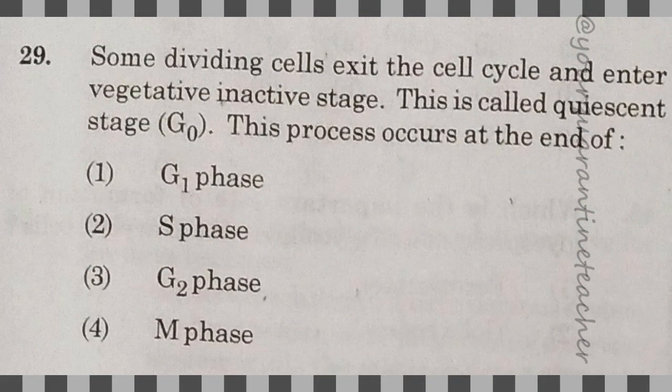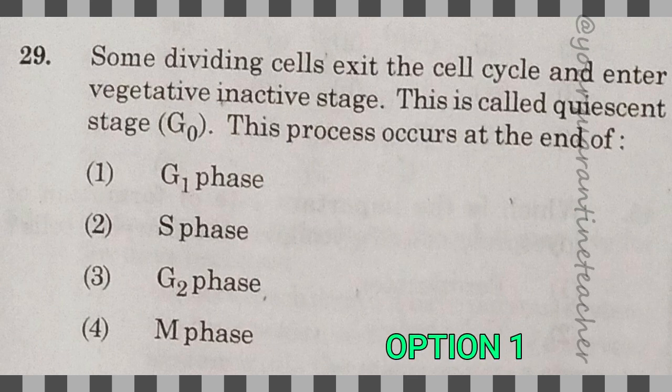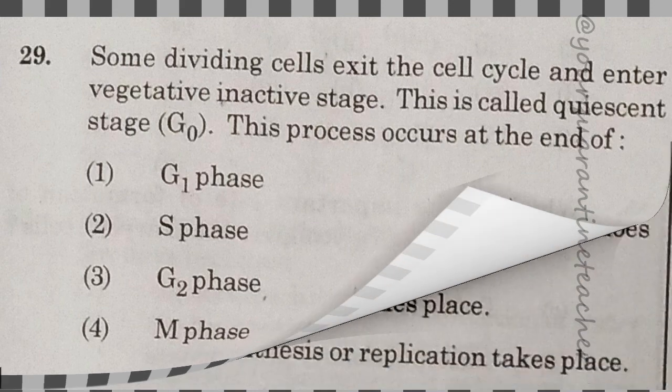29th question: some dividing cells exit the cell cycle and enter a vegetative inactive stage — this is called the quiescent stage, G0 phase. This process occurs at the end of G1 phase. The answer is option 1.